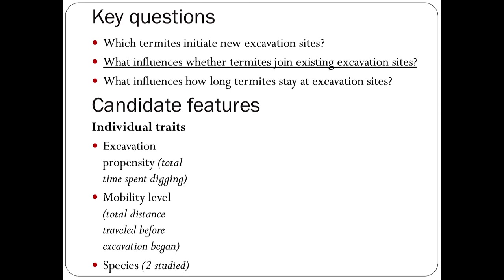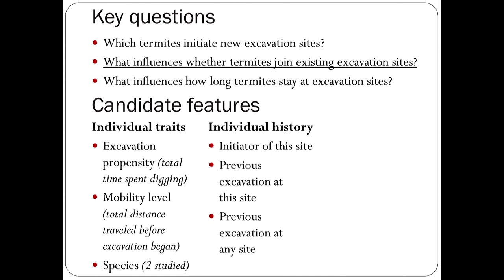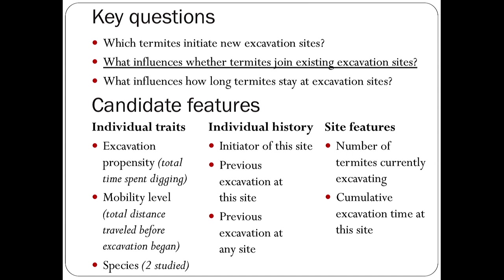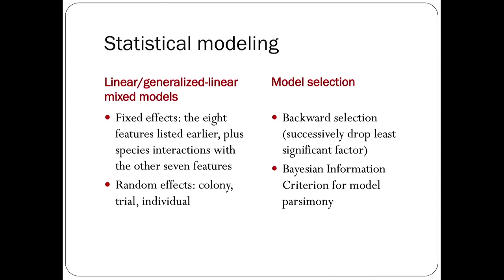The second category involves the termite's memory: was it the one who originally started digging here? Has it been digging at this site already earlier in the experiment? Has it been digging anywhere in the experiment, maybe getting it into the mood for digging? Finally, we looked at characteristics of the site itself: how many termites are currently excavating there, what's the size of the digging party, and how much excavation has already taken place. We used a model selection procedure to statistically examine all these candidate features plus combinations of species with the other seven.